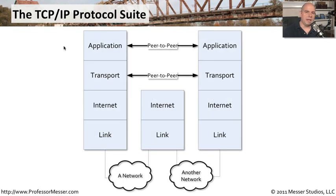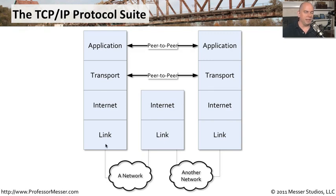Like the OSI model, every time you send information from one system to another, it starts at the top layer and works its way all the way down to the bottom at the physical layer. Information is sent across the network, and on the other side the process is reversed — coming off the physical layer and moving back up to the application layer. It's very similar in the TCP/IP protocol suite: we have the application layer, and then everything moves down to the transport layer, the internet, and the link.